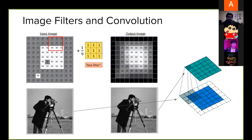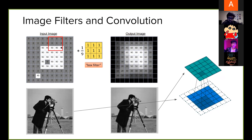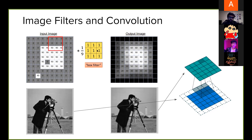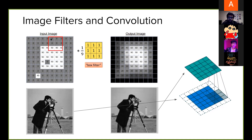What we do is look at the input image number matrix on the left and examine a 3x3 window at a time. You can see this 3x3 square. Looking at that window, it has values 0, 0, 0, 0, 0, 0, 90, 90, 90 — nine numbers. Our filter also has nine numbers, all 1/9. I'm going to multiply the numbers from the filter with the numbers in the small window. So 0 times 1/9 is 0 — the first six numbers are 0. The next three numbers are 90 times 1/9, which equals 10 each.